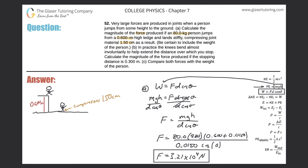Now let's take a look at letter B. Letter B says, in practice, the knees bend almost involuntarily to help extend the distance over which you stop. Calculate the magnitude of the force produced if the stopping distance is 0.3 meters now. So we're literally doing the same thing.